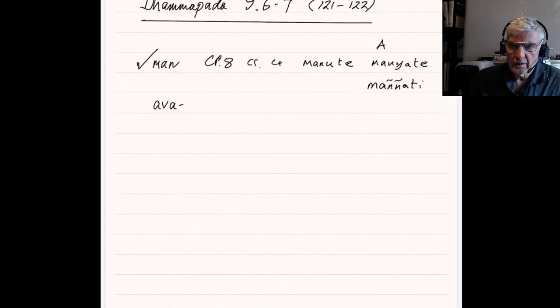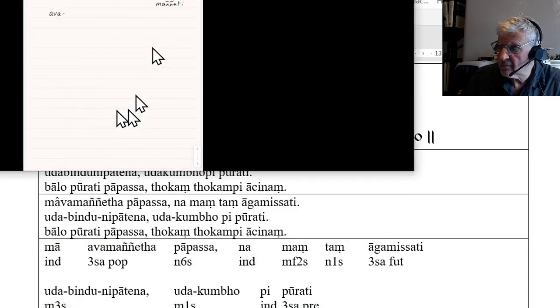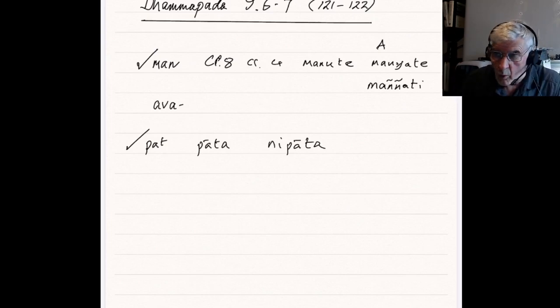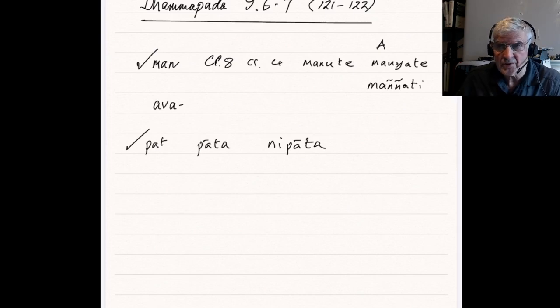So, udha bindu nipatena, the root, sorry, I forgot to put my, put the text back up for you. Udha bindu nipatena, so udha water, bindu drop, nipatah, it's from the root, root pat, meaning to fall, it makes a verbal noun, pata, and ni, down. So, nipata means falling down, or, in the context of a liquid, dripping. So, nipatena, by the down-falling, or, as I said, in the case of a liquid, by the dripping. Udha bindu nipatena, by the water drop dripping. So, by the falling of drops of water. In other words, just drop by drop, one drop will not fill a pot.